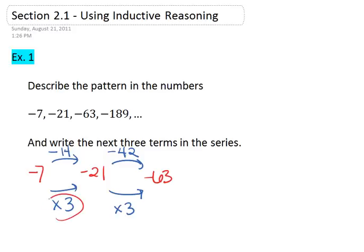Right now the multiply by 3 happens in both. So let's look at the next number, negative 189. We see here we could also multiply by 3. So multiply by 3 appears to be the appropriate pattern.